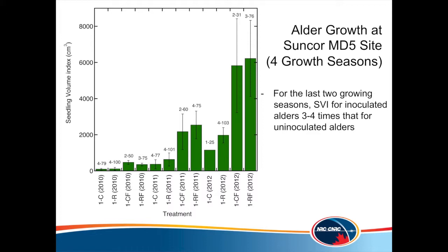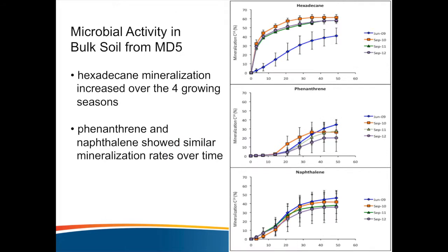The activity measurements involve using hydrocarbons as a substrate to monitor enzyme activity and microbial health in the soil. These are labeled with C14, so we can actually measure the amount of radioactive carbon dioxide produced. The three graphs are for three different substrates: hexadecane on the top, which is an alkane, and then two aromatic hydrocarbons — phenanthrene and naphthalene. The graphs show the bulk soils in this system through the years.